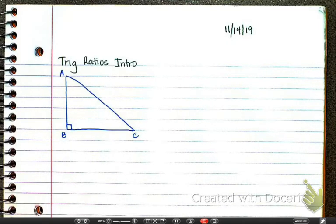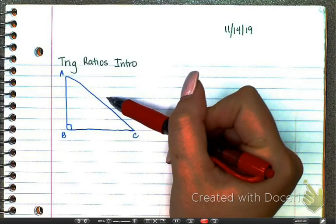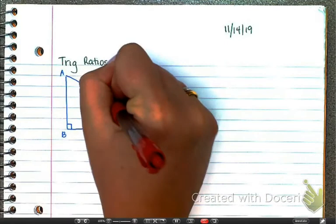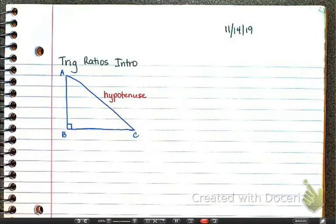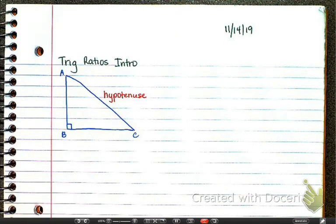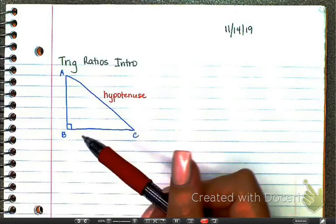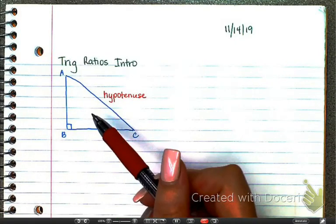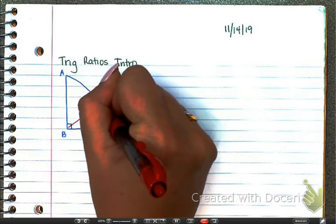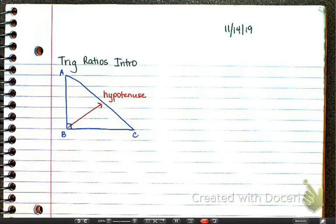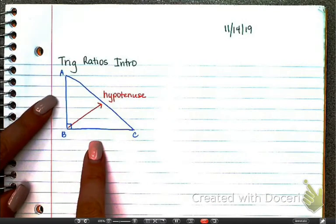What would we name this side of a right triangle? The hypotenuse — that's the name we've known for a while. The hypotenuse is always across from the right angle, always. So your hypotenuse is always directly across from the right angle. The other two sides are called legs.